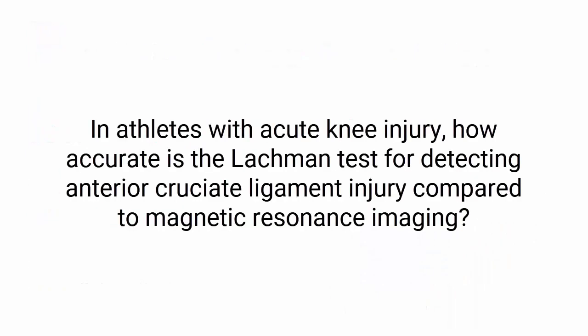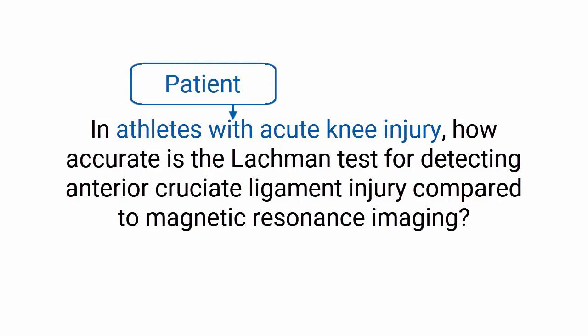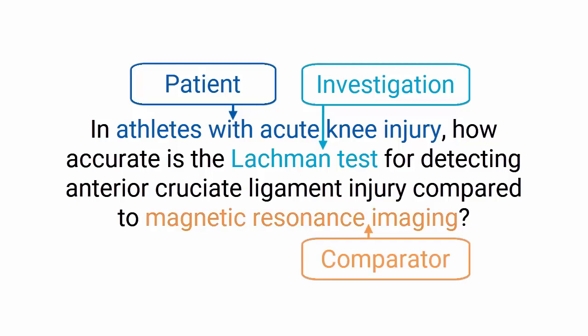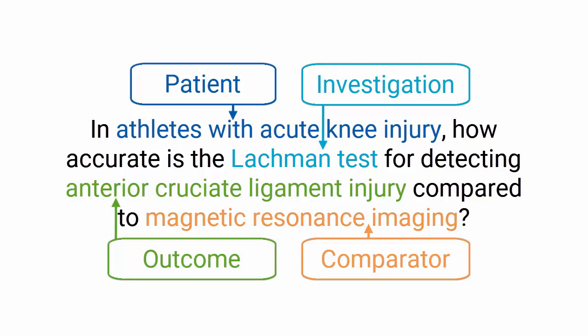We will use this clinical question to demonstrate how to search DITA. In athletes with an acute knee injury, how accurate is the Lachman test for detecting anterior cruciate ligament injury compared to magnetic resonance imaging? In this question, the patient is athletes with acute knee injury. The investigation is the Lachman test. The comparator is magnetic resonance imaging. And the outcome is anterior cruciate ligament injury.